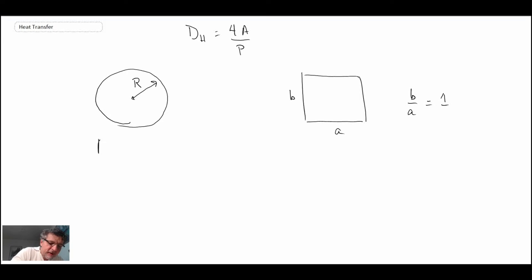For the round shape, the area we know is πr². The perimeter is 2πr. Consequently, evaluating the hydraulic diameter, what we end up with is the hydraulic diameter for the round shape is just two times the radius, which would be the normal diameter.